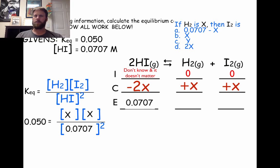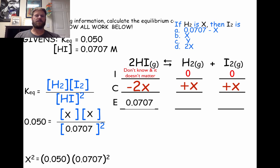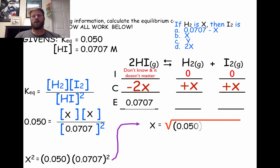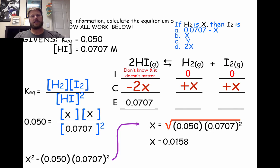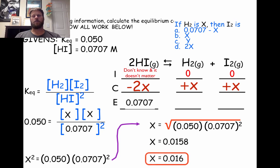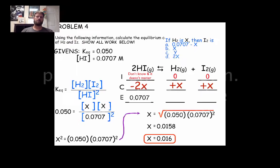Now we can plug these values into our equilibrium expression and solve for X. The numerator becomes X squared. So X squared equals 0.050 times 0.0707 squared. We take the square root of that product and get 0.0158. The equilibrium constant is only 2 sig figs, so our answer can only be 2 sig figs. The equilibrium concentration of both products is 0.016 molar.